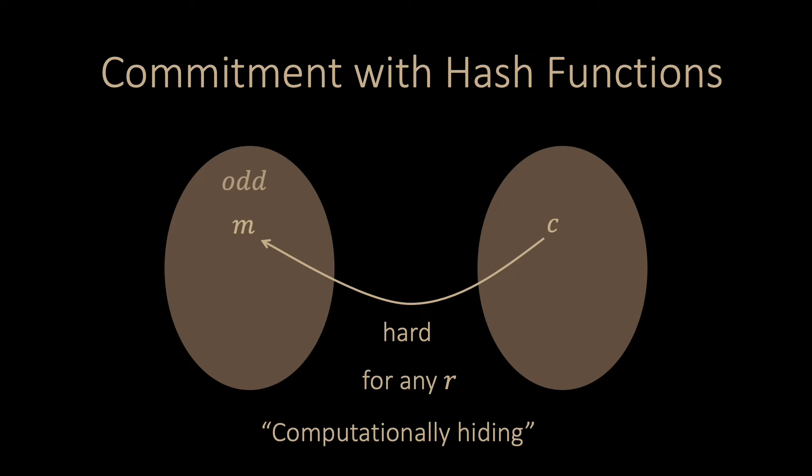This is not inverting the hash function, but still Sherlock might be able to get partial information about the message. Hence, typically this construction is heuristically secure, but to prove the hiding property, the particular hash function needs to have additional properties.